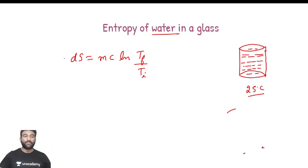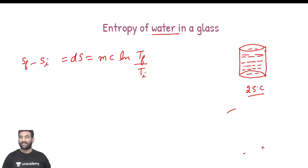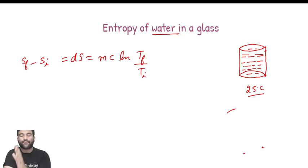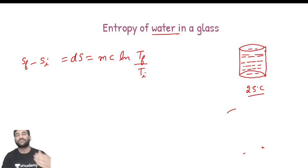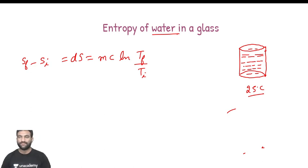Here, entropy change dS is: final entropy minus initial entropy. Now if you want to find out entropy at a particular state, you need to take a reference point at which entropy is assumed to be zero.